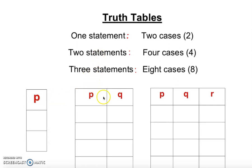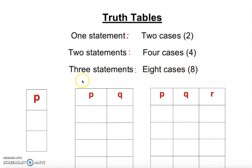Two statements means two variables or two letters. In truth tables we typically use P, Q, and R — similar to how in algebra we use X, Y, and Z — but any letters work. The values in a truth table are only true and false. So two letters give four cases, and three letters give eight cases.